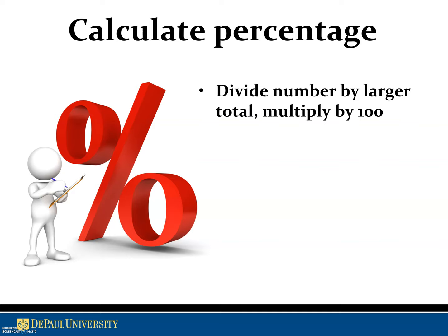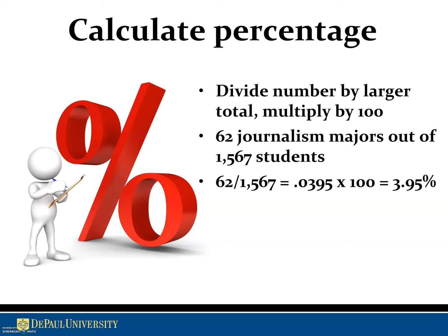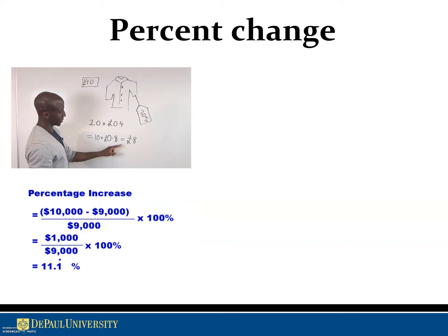Calculating a percentage is straightforward: divide the part by the larger total and multiply by 100. For example, if you have 62 journalism majors out of 1,567 students, you get 3.95%. You could express that as a ratio — one in X is a major — or as a percentage, which is usually much easier for most people to process.